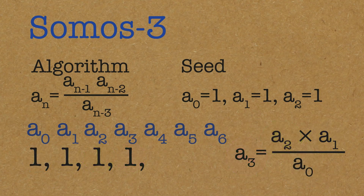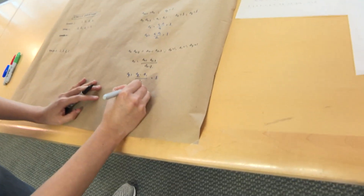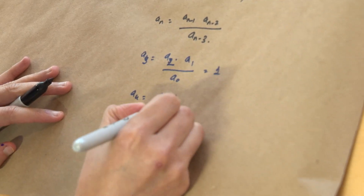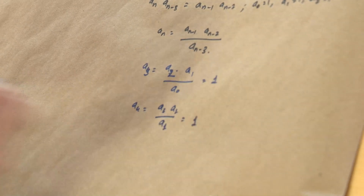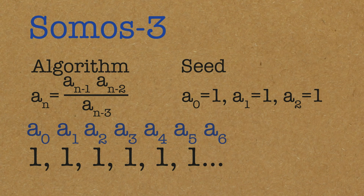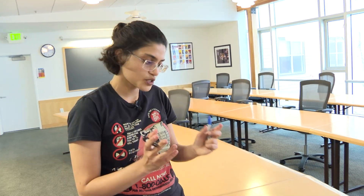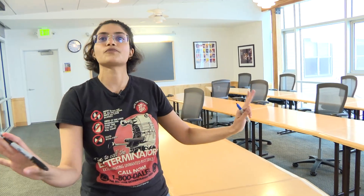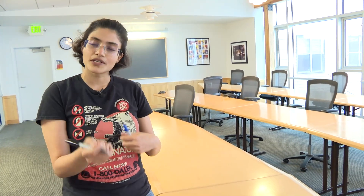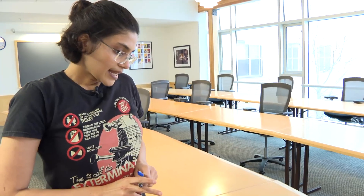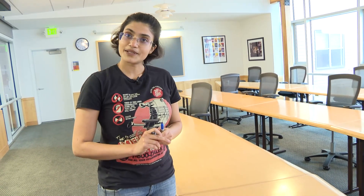I'm getting pretty sick of 1s. Well, you need to wait slightly longer. You have a_4, and since you're already sick of 1s, you'll see another 1 — because you have a_3 times a_2 divided by a_1. So 1 again and 1 again. It'll continue to be a string of 1s. So, Somos 1, 2, and 3 are all just strings of 1s — nothing interesting happening, but it gives you a feel of where the algorithm is going.